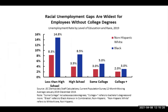The racial unemployment gaps are widest for employees without college degrees. Blacks are represented in blue, non-Hispanic whites in red, shown as unemployment rate by level of education and race. For those with less than a high school degree, the gap is widest, but blacks are still the most unemployed. Even at the college level, the gap narrows but there are still more unemployed blacks with college degrees than there are whites.